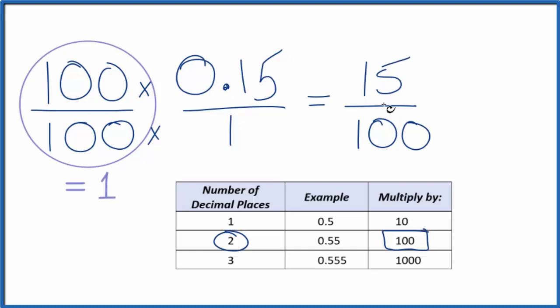Now that we have 15 over 100, we can get this down to the lowest simplified form. We could divide the top by 5. 15 divided by 5, that gives us 3. And 100 divided by 5, that gives us 20.